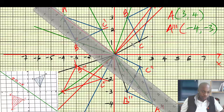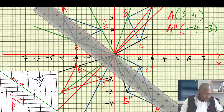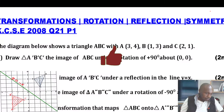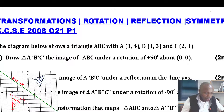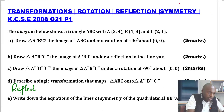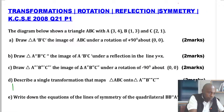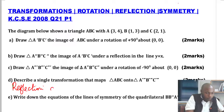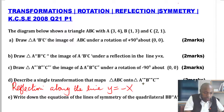Therefore this is a reflection along the line y = -x, which maps triangle ABC to triangle A-triple-prime, B-triple-prime, C-triple-prime. If you've studied the properties of reflection, you'll be able to identify that. So to describe the transformation, we simply say: this is a reflection along the line y = -x.